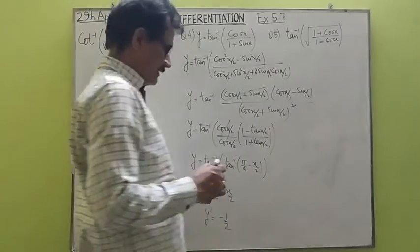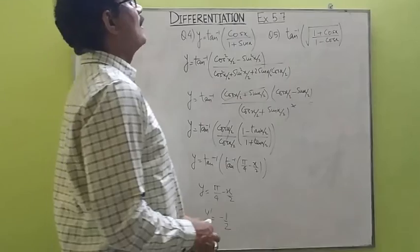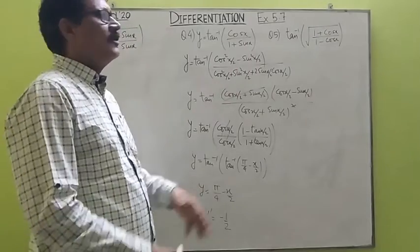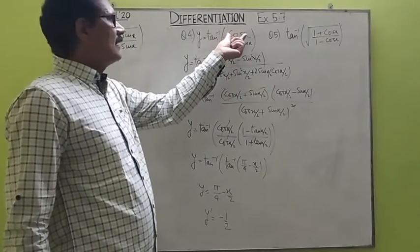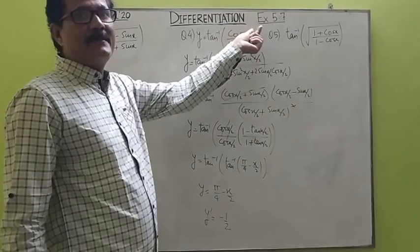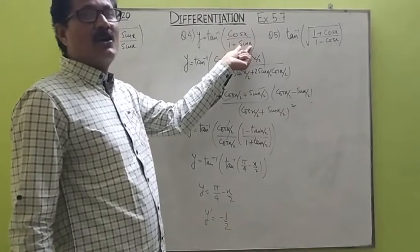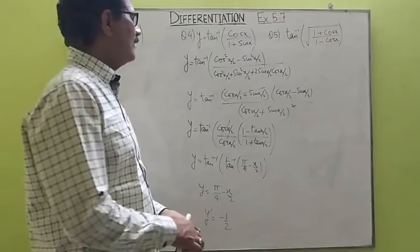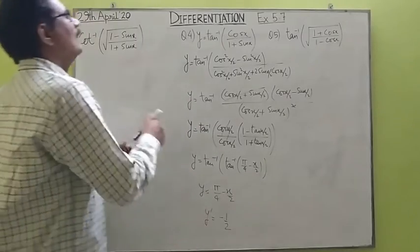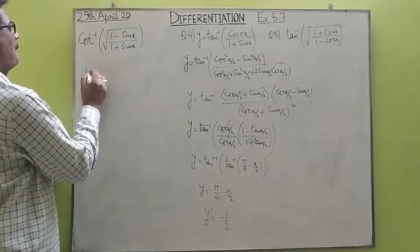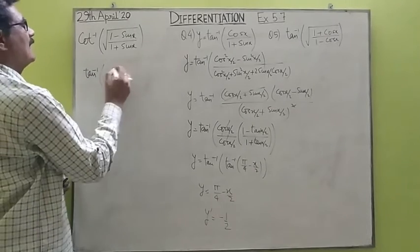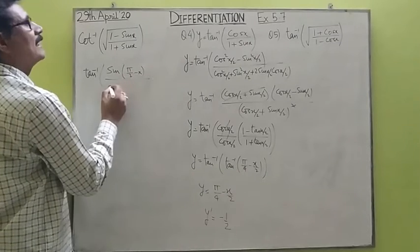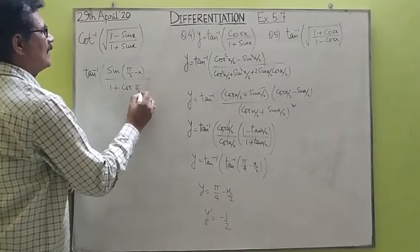Moving on to the next sum: tan inverse of (1 plus cos x) upon root of (1 minus cos x). This sum can be done another way also — we can write cos x as sin(π/2 minus x) using complementary conversion, and sin x as cos(π/2 minus x), and then simplify using the formula. In this alternative method, we write the numerator as sin(π/2 minus x) and the denominator as 1 plus cos(π/2 minus x).